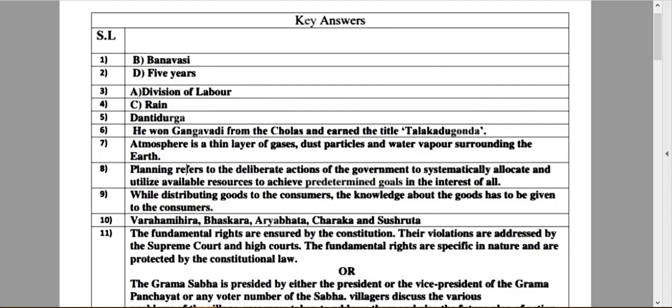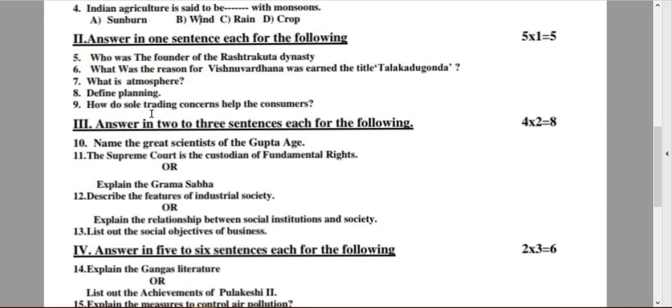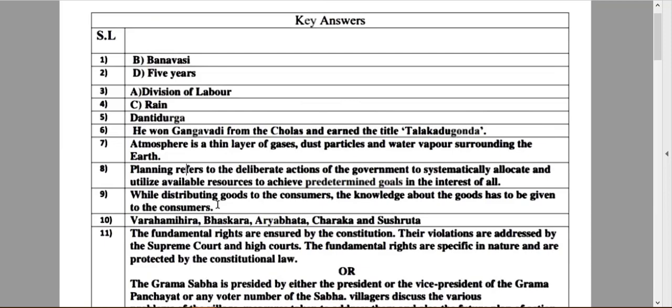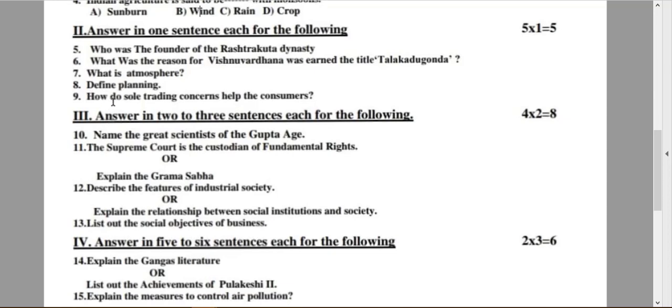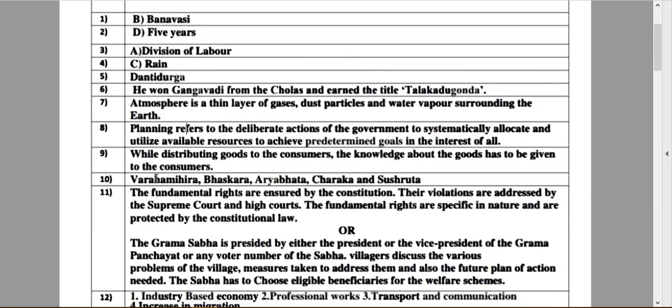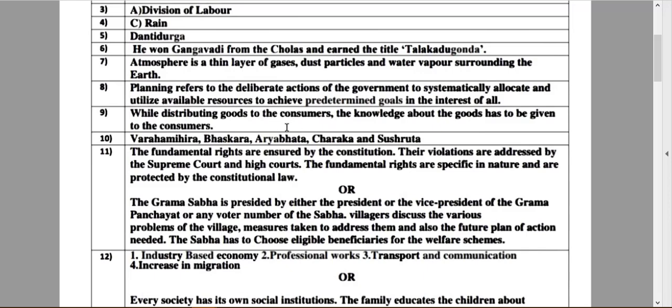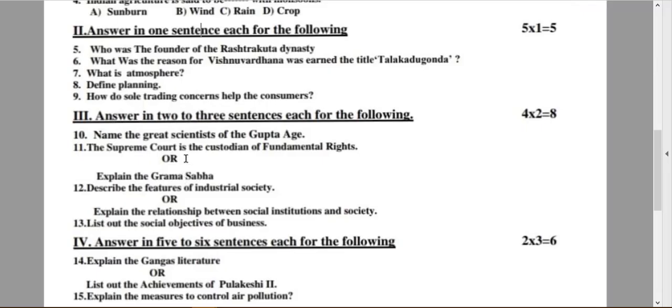The next question, question number 8: Define planning. The answer is: planning refers to the deliberate actions of the government to systematically allocate and utilize available resources to achieve predetermined goals in the interest of all. The next question, question number 9: How do sole trading concerns help the consumers? The answer for this question: while distributing goods to consumers, the knowledge about the goods has to be given to the consumers.